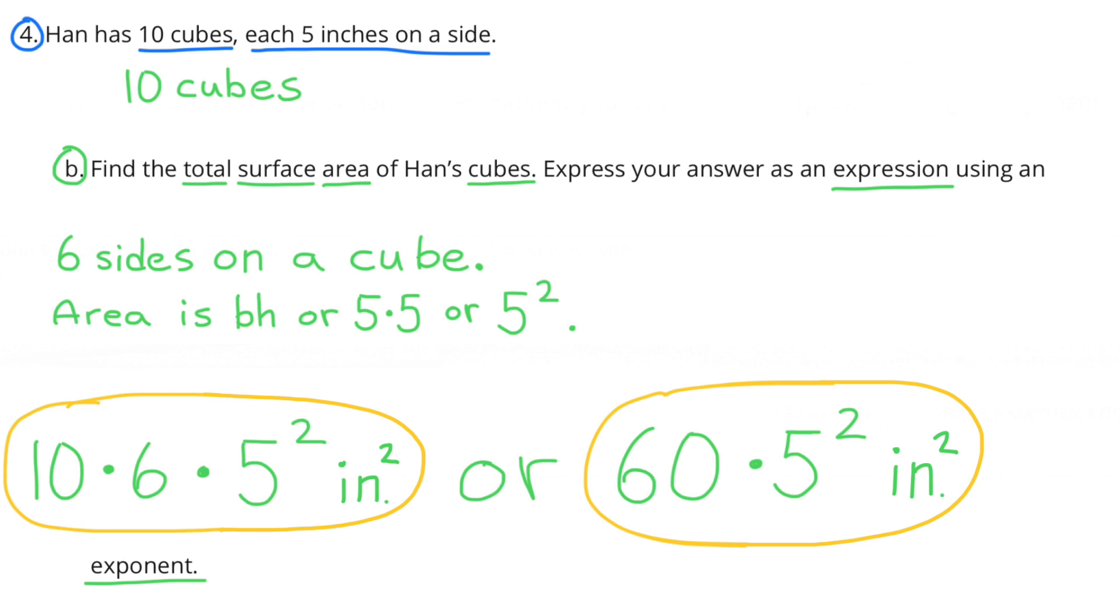Or, since 10 times 6 is 60, we can say 60 times 5 squared, inches squared.